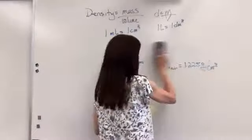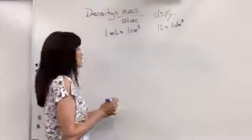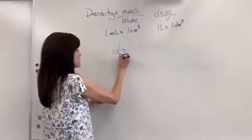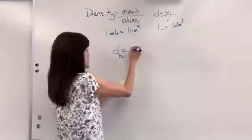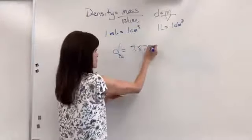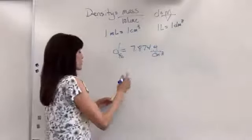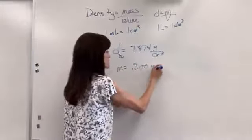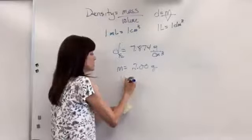This time we're going to look for the volume. Okay so let's say that we're given the density of iron. The density of iron is 7.874 grams per centimeter cubed. And we're told that the mass is 2.00 grams. So I've got my three sig figs there. And we want to know what's the volume.